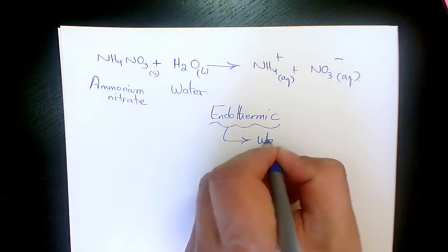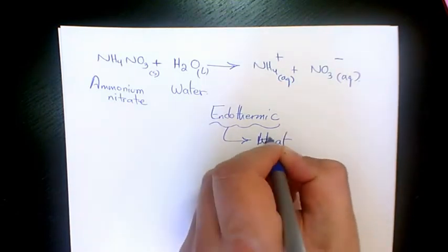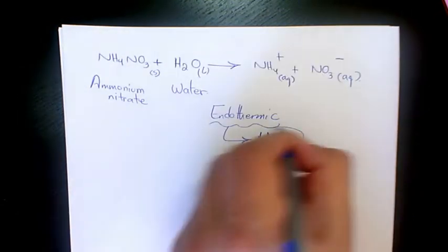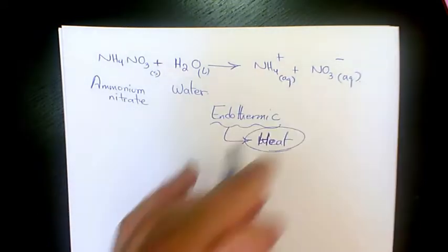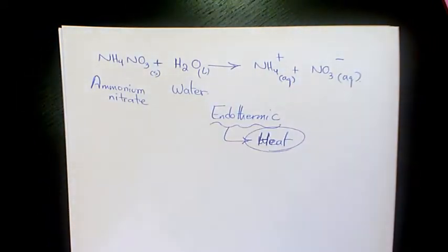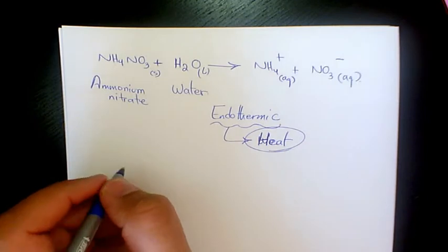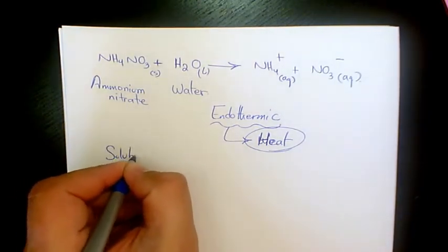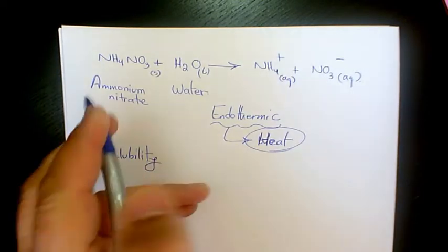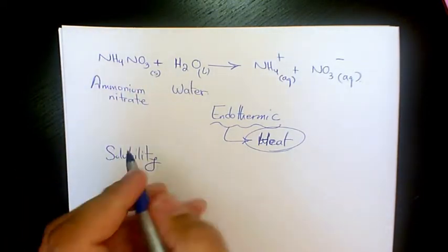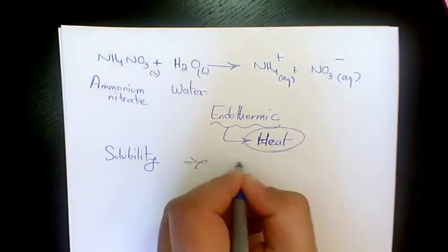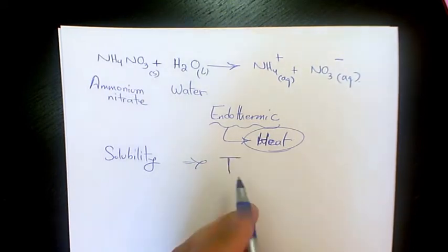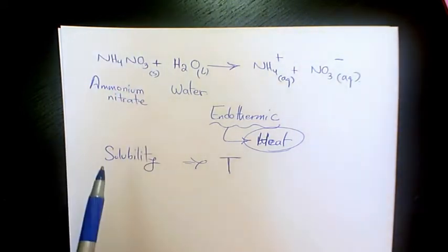The temperature goes down during the reaction. The solubility of ammonium nitrate in water increases as you increase the temperature. When you increase the temperature of ammonium nitrate, the solubility in water increases as well.